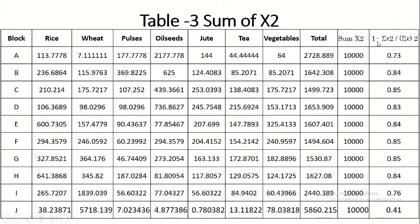The Gibbs-Martin index is: 1 minus (sum x² / sum x²). For Block A: 1 minus (2728.889 / 10,000) = 0.73. For Block B, the sum x² is 1642.308, giving: 1 minus (1642.308 / 10,000) = 0.84. We calculate all values this way, obtaining the Gibbs-Martin index for all blocks. The lowest value is 0.41 for Block J.